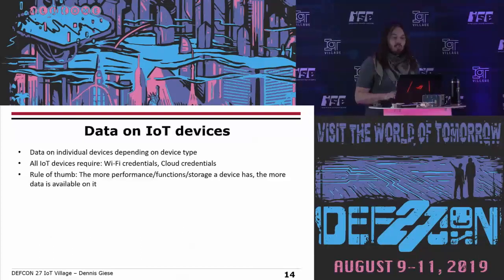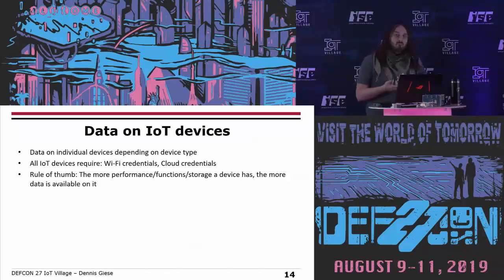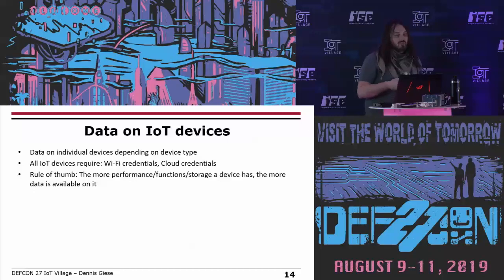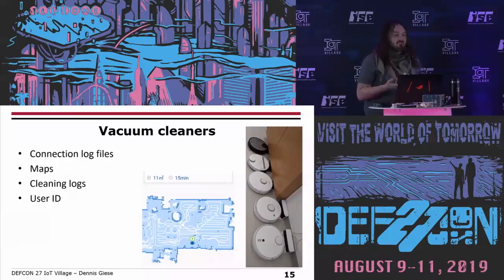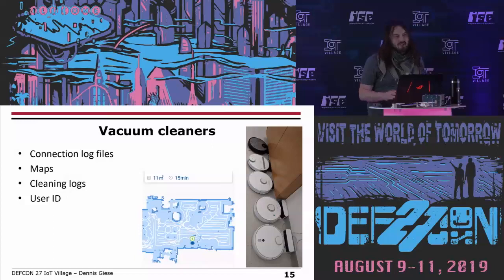Let's talk about the data on IoT devices. The data found depends on the device type, but one important thing common to all IoT devices is they need Wi-Fi credentials — without them it can't connect to the internet. Most devices also have cloud credentials to authenticate against the cloud. As a rule of thumb, the more powerful or storage-rich a device, the more data it collects. Vacuum cleaning robots typically contain connection log files, maps, cleaning logs, and user IDs. I analyzed many vacuum cleaners — I have quite a collection.